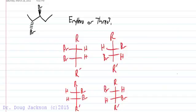But if we do have to tell which is which, we can take, say, this compound, and we can turn it into a Fischer projection.